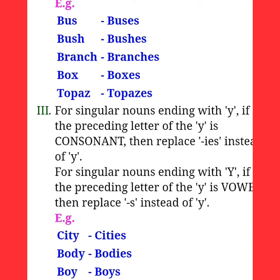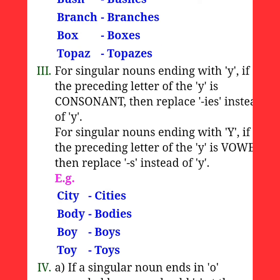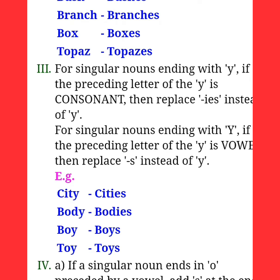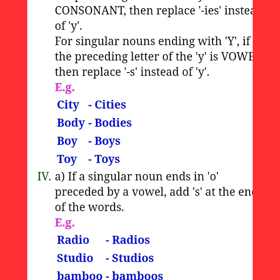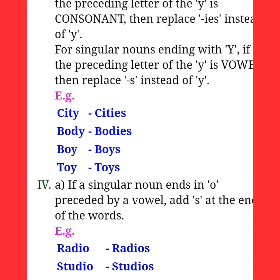For singular nouns ending in Y, if the preceding letter is a consonant, replace Y with 'ies' — like city/cities and body/bodies. But if the preceding letter is a vowel, just add S — like boy/boys and toy/toys.